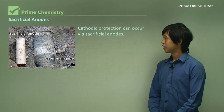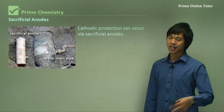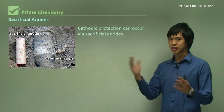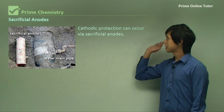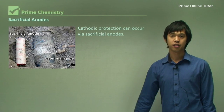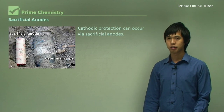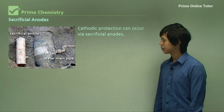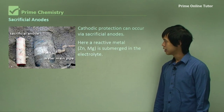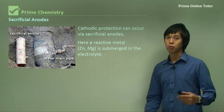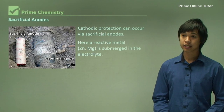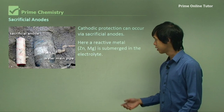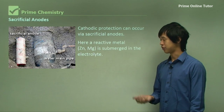So how do we do this? We use sacrificial anodes. If there's a cathode, there's got to be an anode. Cathodic protection can occur via sacrificial anodes — there are other methods, but this is the first one. We need to find a sacrificial anode: a reactive metal like zinc or magnesium, something more reactive than the thing we want to protect. Zinc and magnesium are more reactive than iron, and we submerge them in the electrolyte.